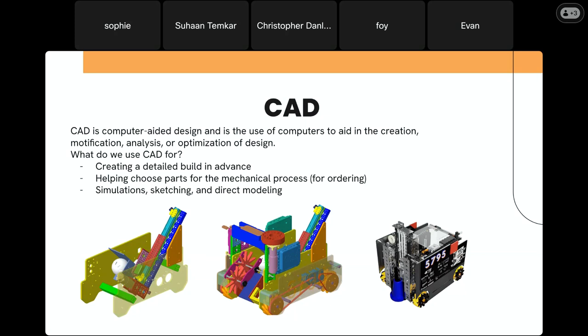CAD is very important because it helps us plan our entire build in advance and choose specific parts. As you can see, each of these are very specific manufactured parts, which becomes very helpful when we're actually trying to put the robot together. We can render it like that final picture — overall, it's really just a useful analytic tool and it's good for planning.